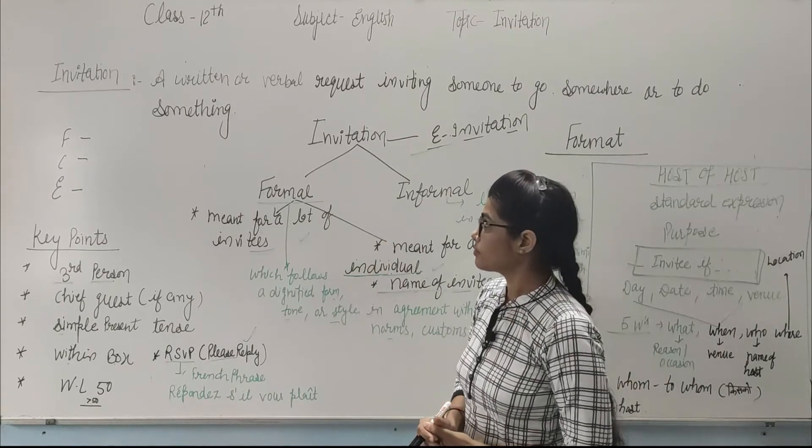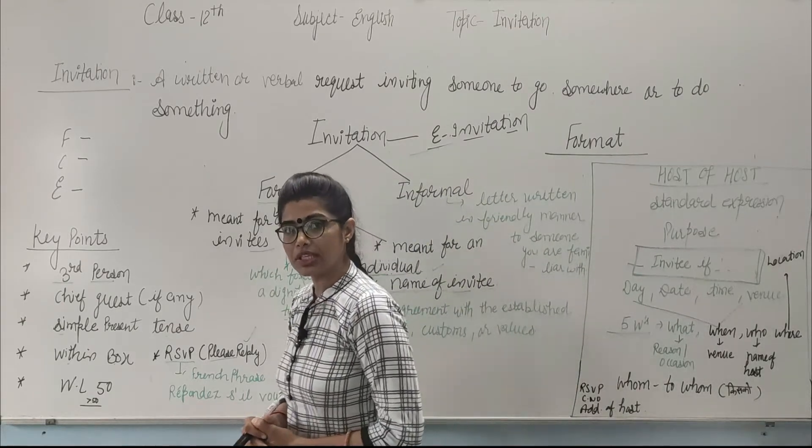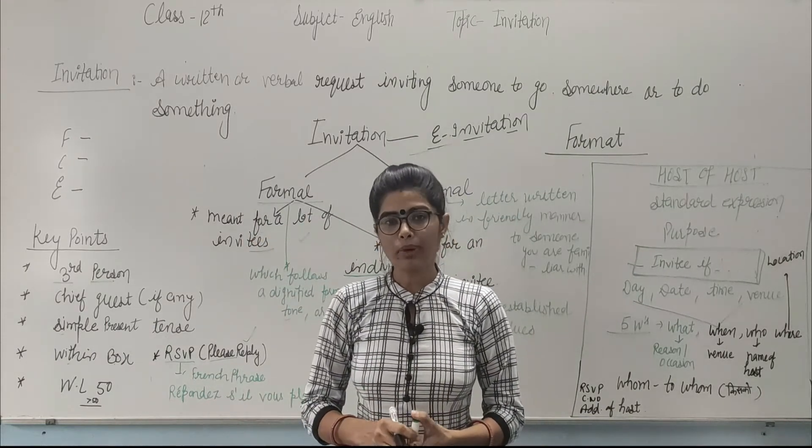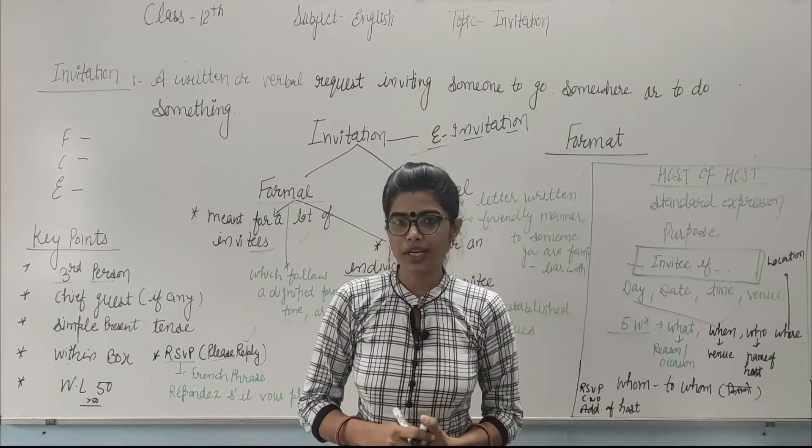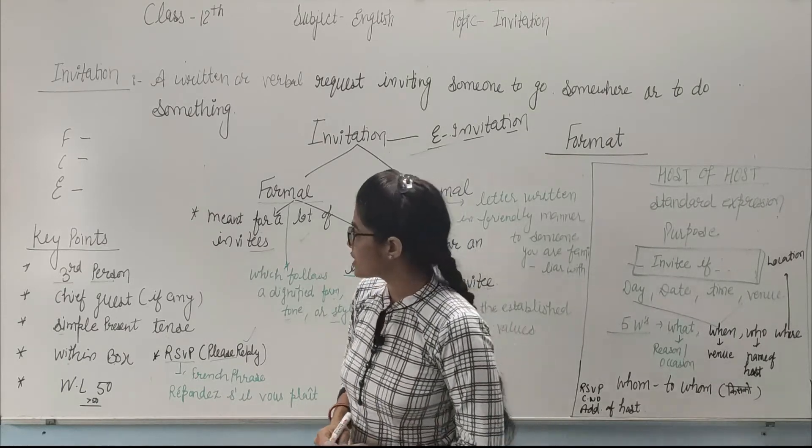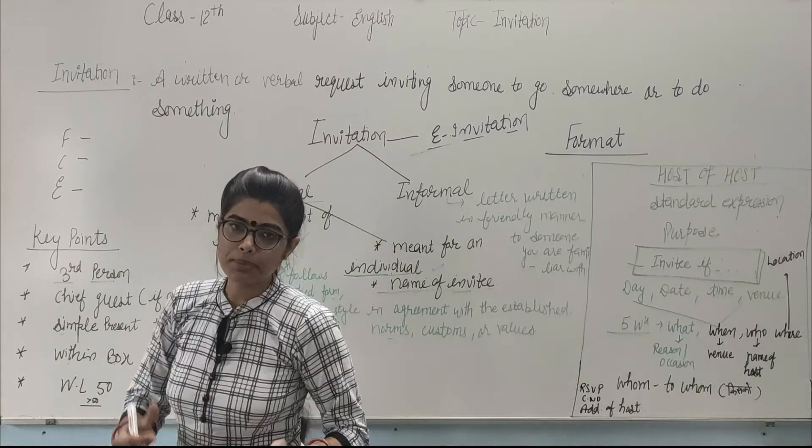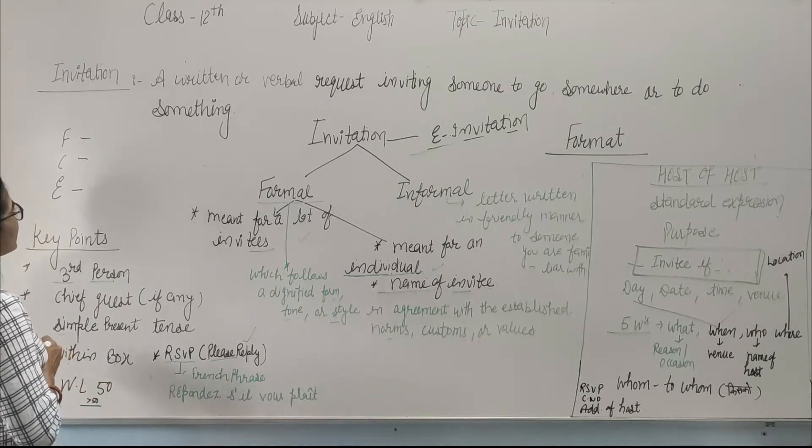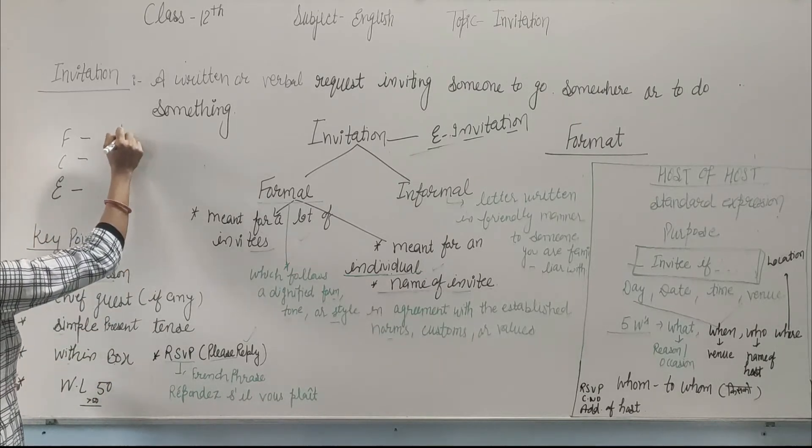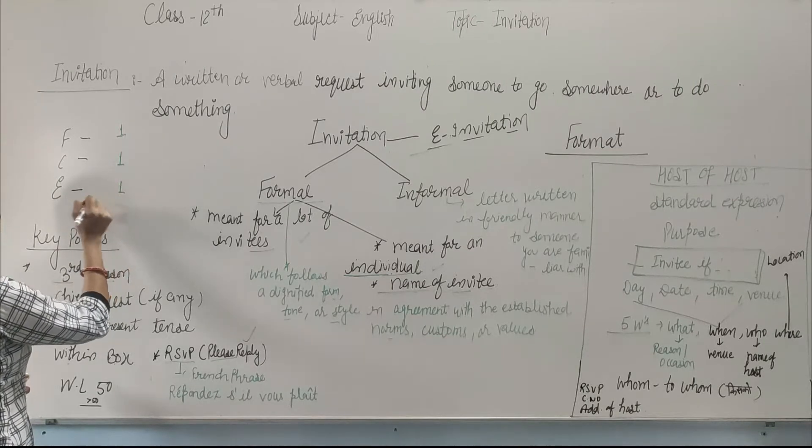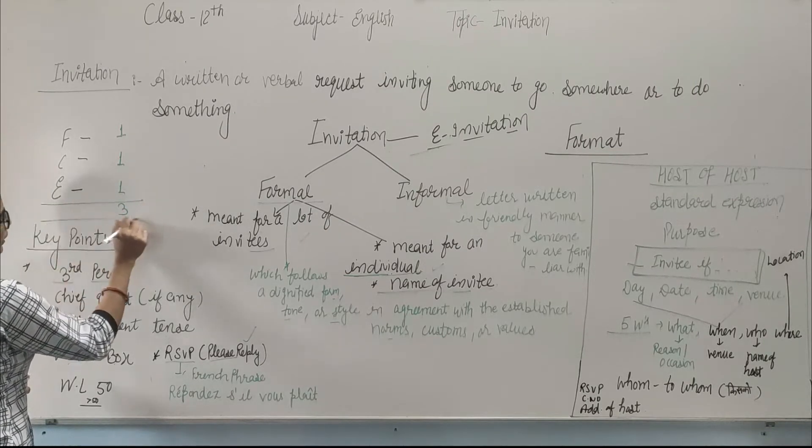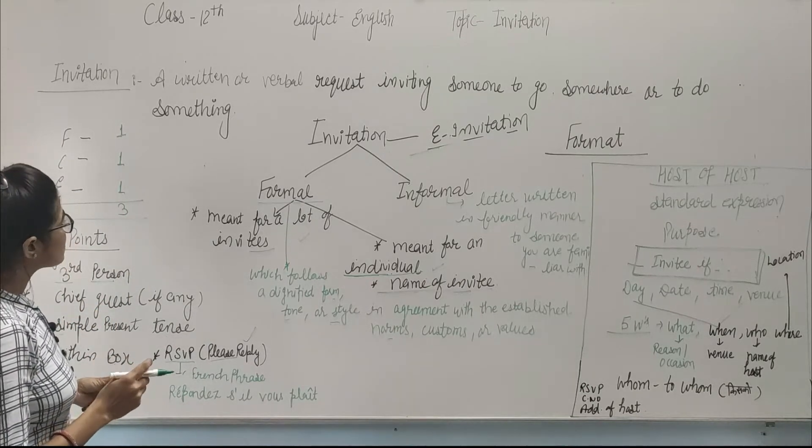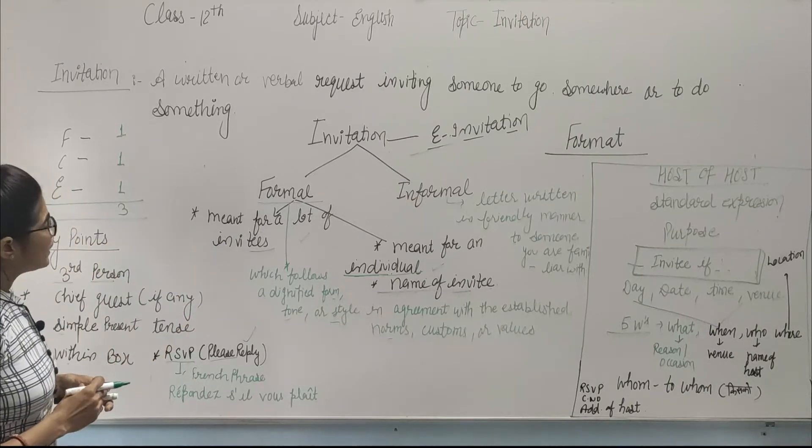Earlier, invitation writing was of two types: formal and informal. Previously, the marking scheme was four marks in a one-two-one category. But now, due to COVID-19, some syllabus has been deleted by CBSE. According to the current marking scheme, the format is one mark, content is one mark, and expression is one mark - overall three marks from an exam point of view.